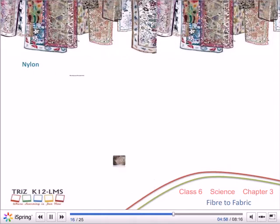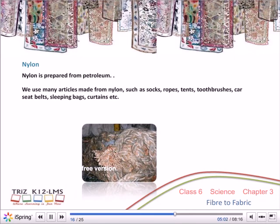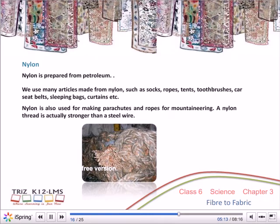Nylon is prepared from petroleum. We use many articles made from nylon, such as socks, ropes, tents, toothbrushes, car seat belts, sleeping bags, curtains, etc. Nylon is also used for making parachutes and ropes for mountaineering. A nylon thread is actually stronger than a steel wire.